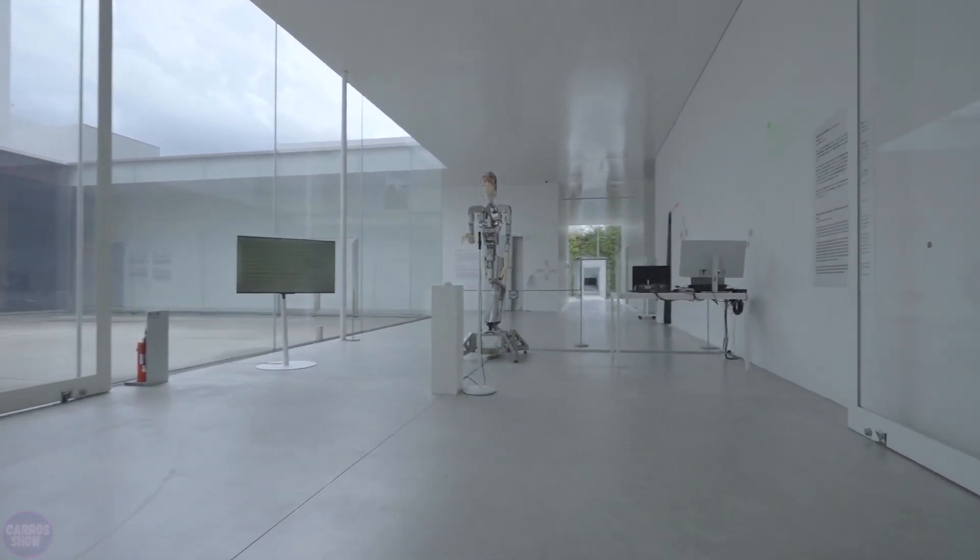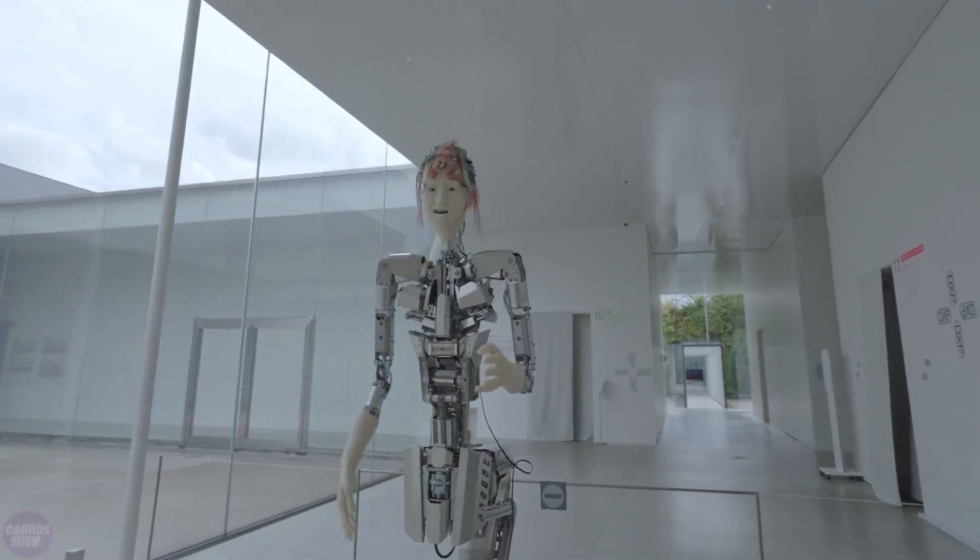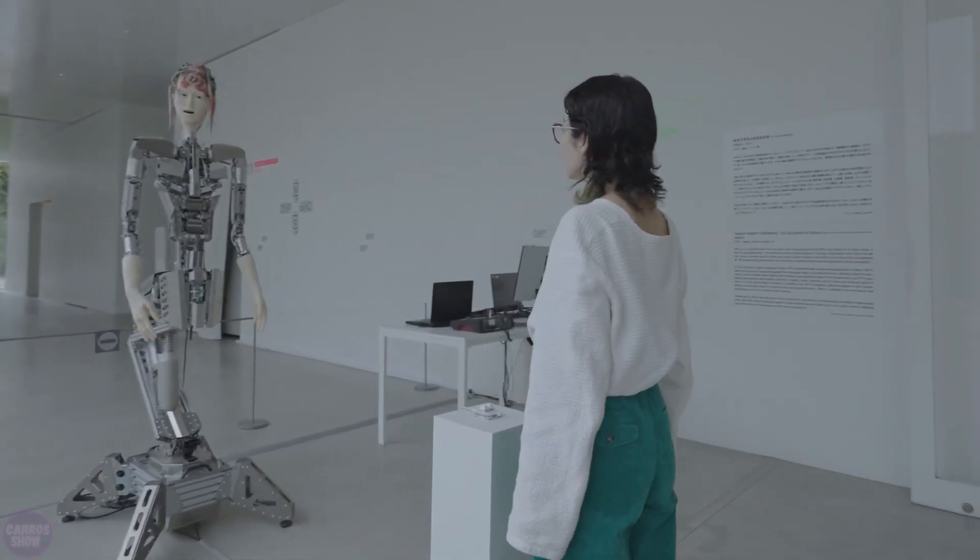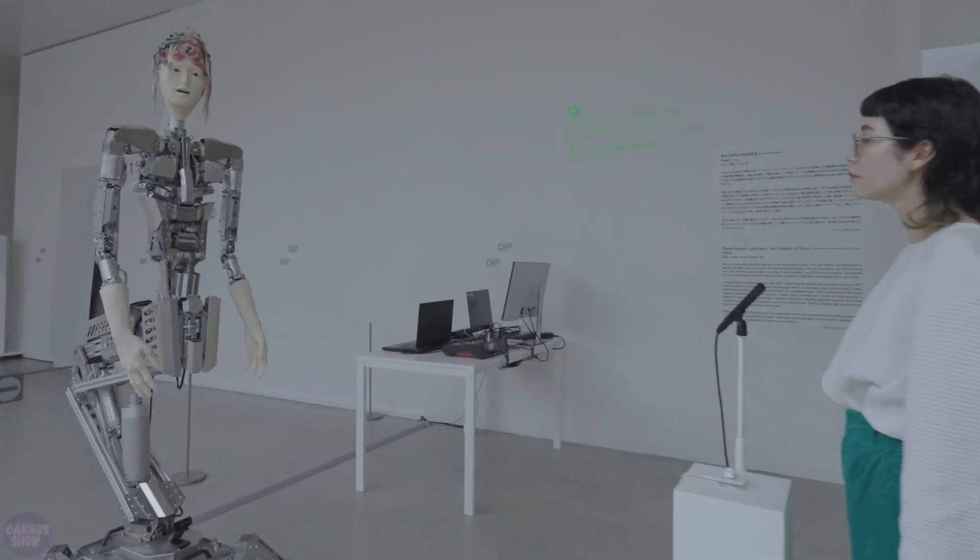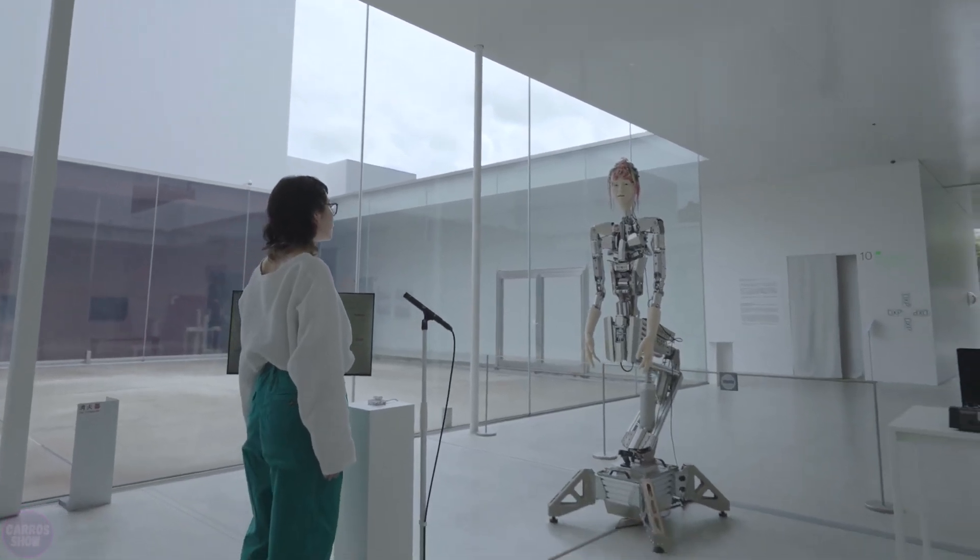Altar 3 is the latest humanoid robot developed by researchers from the University of Tokyo, in collaboration with Osaka University, integrated with the powerful AI model GPT-4. This enables the robot to perform complex movements and imitate human behavior using simple verbal commands.